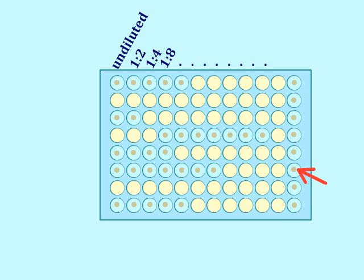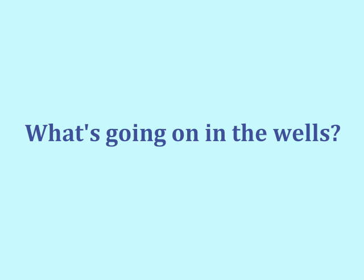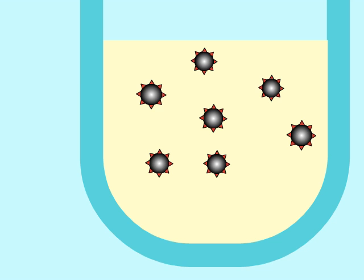So what accounts for the appearance of the positive wells, and what accounts for the lack of change in the negative wells? To understand, let's take a microscopic look at the negative and positive wells. When there is no antibody in the well, the beads remain in suspension, giving the well a milky appearance.